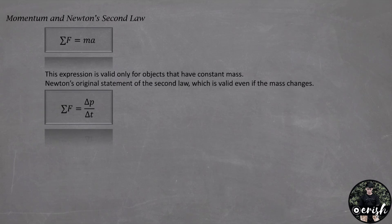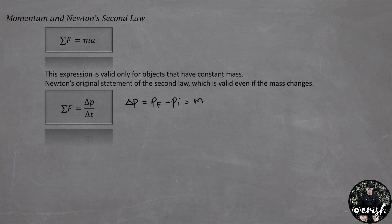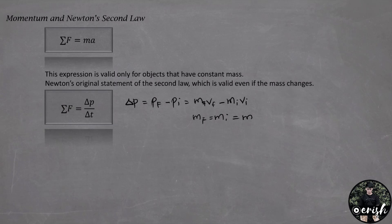To show the connection between these two statements of the second law, consider the change in momentum. The change in momentum is equal to the final momentum minus the initial momentum. This is equal to mass final times velocity final minus mass initial times velocity initial. If the mass is constant, then mass final equals mass initial, so we can write it simply as mass. It follows that the change in momentum is simply mass times the change in velocity.